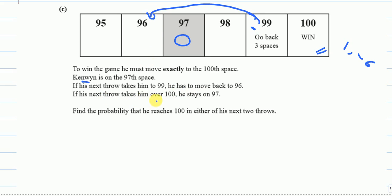If his next route takes him over 100 he stays on 97. So if I get a 4 for example I should have been here. So I cannot move more than 100. I will stay at 97. So if I get more than 3, because for 3 I will be here, more than 3 I will not move anywhere. I will just stay on 97. So this is what the 2 rules say here of the game.